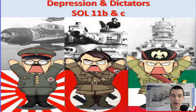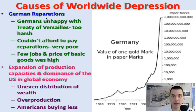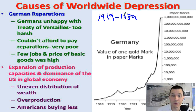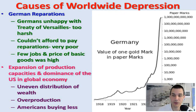In this video we're going to be going over what's known as the interwar period, which is the period between 1919, when World War I officially ends, and about 1937 to 1939, when World War II starts. A big thing that happens towards the end of the 1920s and into the 1930s is the Great Depression.